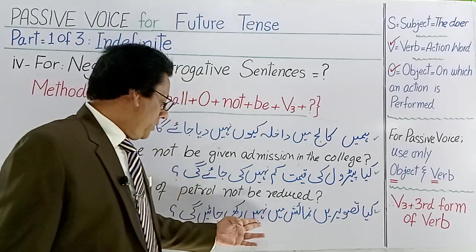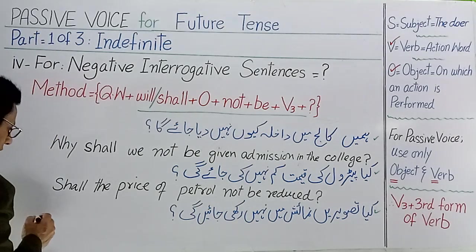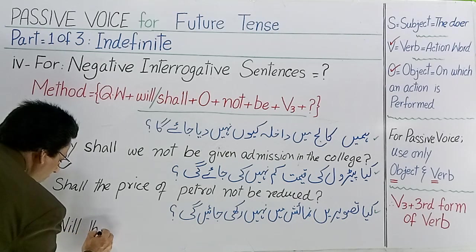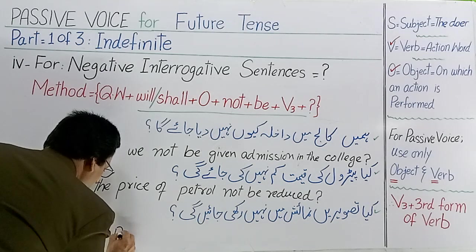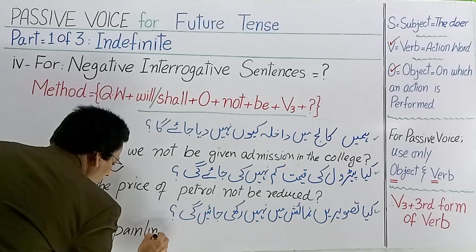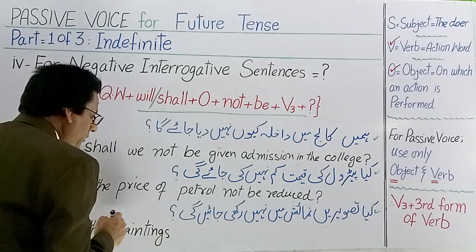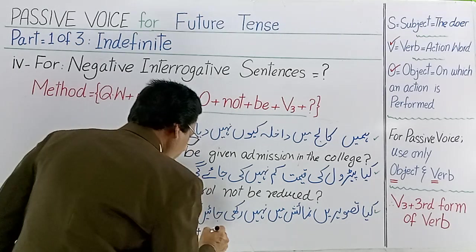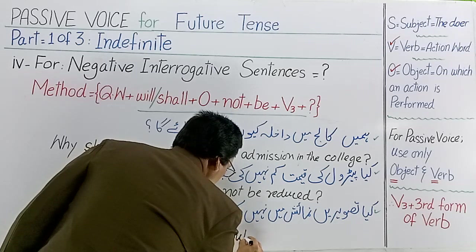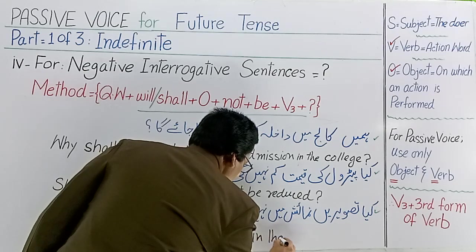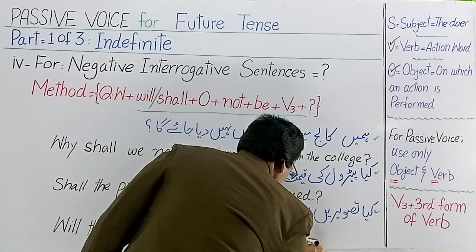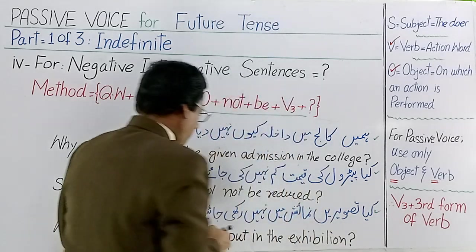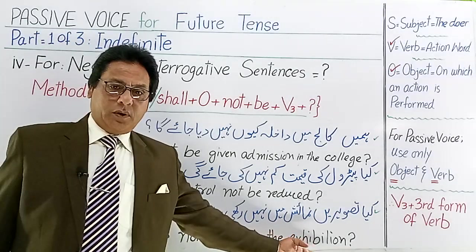उसके बाद हमारे पास अगला sentence है — क्या तस्वीर नुमाइश में नहीं रखी जाएगी? Will or shall का यूज कर रहे हैं — will the paintings not be put in the exhibition? E-X-H-I-B-I-T-I-O-N, exhibition. क्या तस्वीर नुमाइश में नहीं रखी जाएगी — will the paintings not be put in the exhibition.